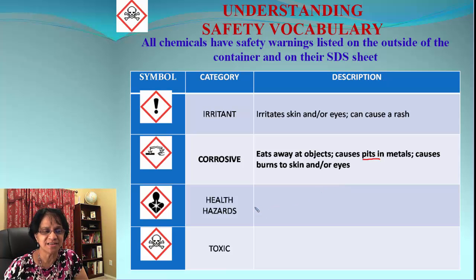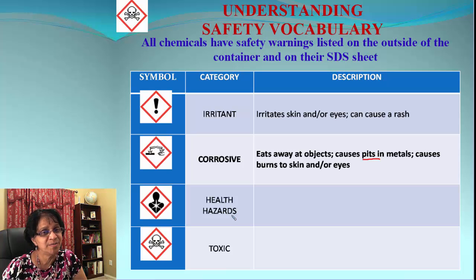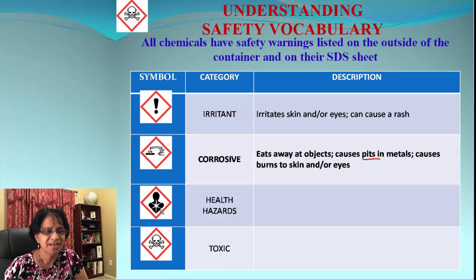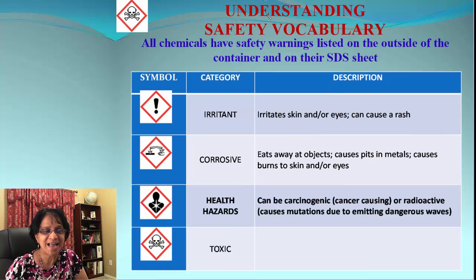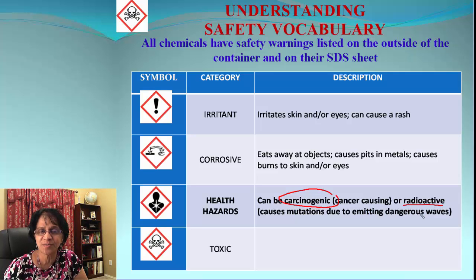Next is health hazard. Some chemicals may be dangerous to us, and the effect may be quick or long-term — maybe showing up after a couple of months. The GHS symbol has a shiny star with a human body, indicating it's about health. Some of these could be carcinogenic substances which can cause cancer; some could be radioactive substances, which are even worse because they can cause mutations. We'll learn about both of these later.